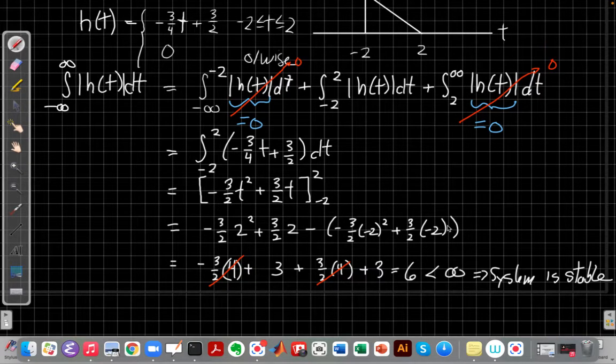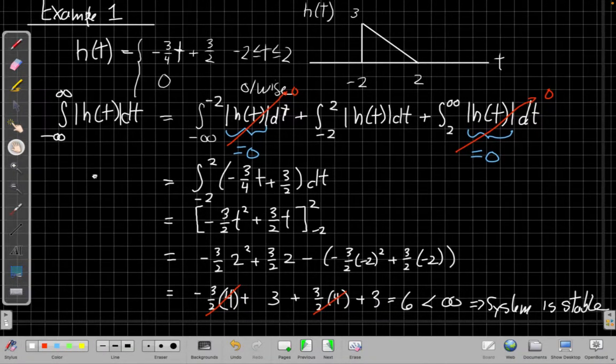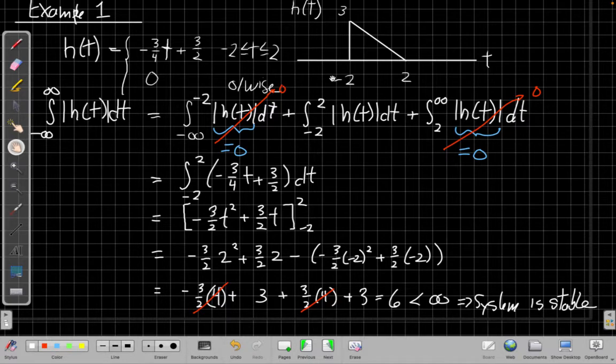And now for this particular one, we should have expected that answer anyways. Another advantage of drawing the impulse response out, like I did at the top here, is because this is all positive, that integral is just the area under the triangle. And I almost don't need to find the number. I can look and say, is the area under that triangle finite? Yes it is. I have a base that's four wide, a height that's three, so the area of a triangle is one half times the base and the height. So one half times four times three gives me six. So that's another good sanity check that I've got the integral right.